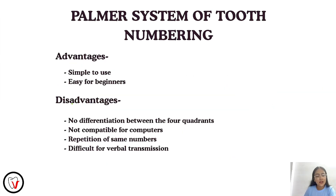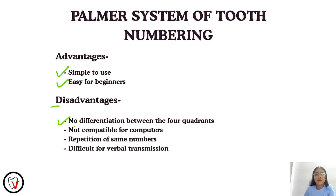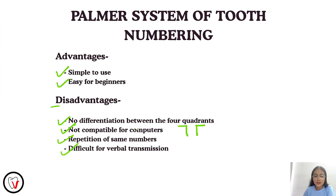Coming to the advantages and disadvantages of the Palmer system of tooth numbering. This system is very simple to use and easy for beginners. Disadvantages: there is no differentiation between the four quadrants — if we say tooth number one, we don't know if it's maxillary, mandibular, right, or left. It is not compatible with computers, as the symbols used to show the quadrants cannot be entered digitally. There is also repetition of the same numbers and it is difficult for verbal transmission.